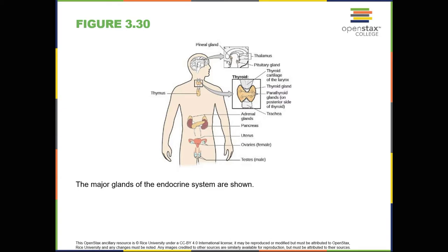Section 3.5: The Endocrine System. Learning objectives: by the end of this section you'll be able to 1. identify the major glands of the endocrine system, 2. identify the hormones secreted by each gland, and 3. describe each hormone's role in regulating bodily functions.